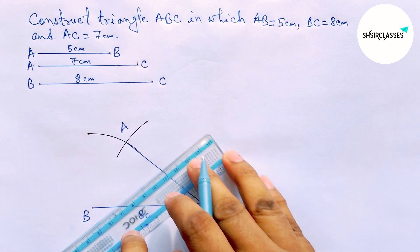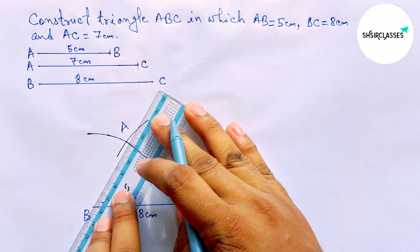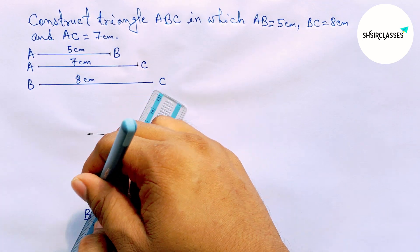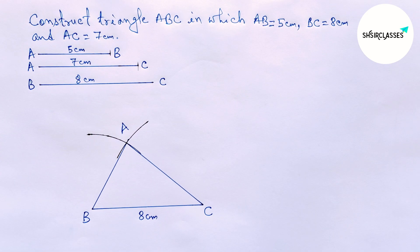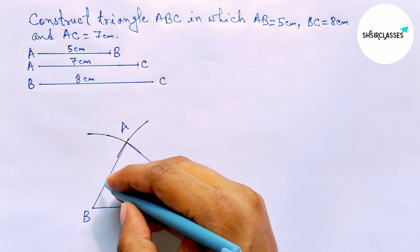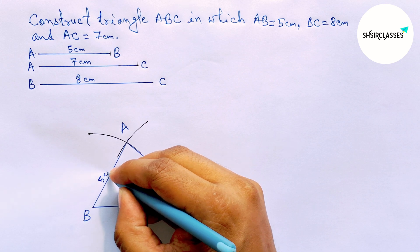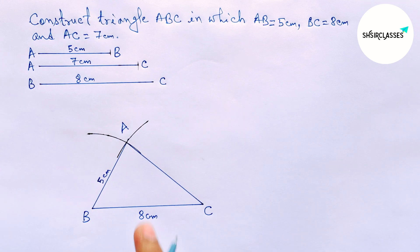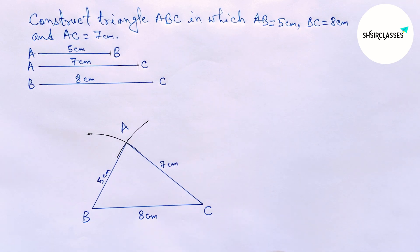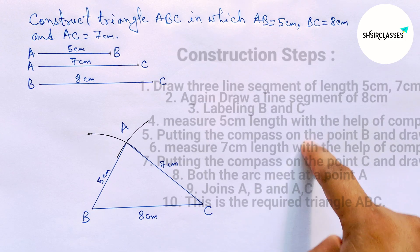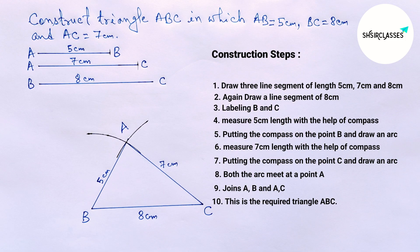First joining A and C, then joining A and B to complete the required triangle. Here AB equals 5 centimeters and AC equals 7 centimeters. This is the required triangle ABC. I will provide all the construction steps here. That's all.